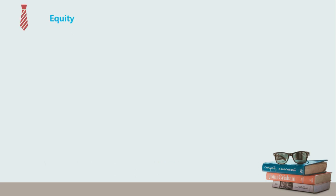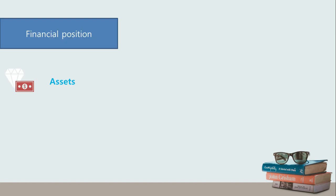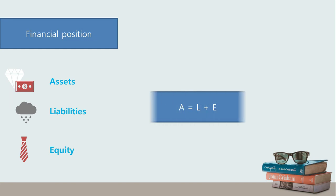The third element is equity. Equity is the residual interest in the assets of the entity after deducting its liabilities — in other words, what is left of its assets after satisfying its obligations. These three elements make up the elements pertaining to financial position: assets, liabilities, and equity, best remembered by the basic accounting equation: assets equal liabilities plus owner's equity.